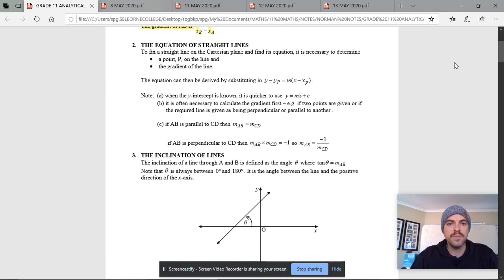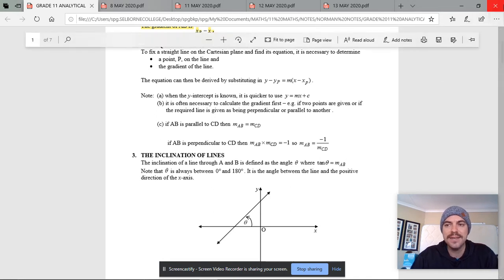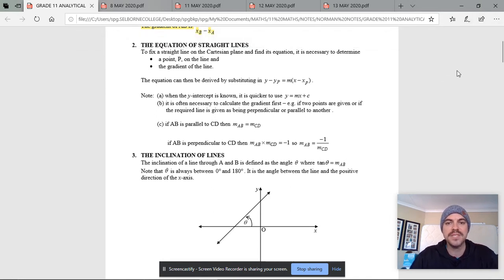The second part of these notes spoke about the equation of straight lines. A straight line, you remember, the standard form is y equals mx plus c, there it is. The m talks about the gradient and the c talks about the y-intercept.